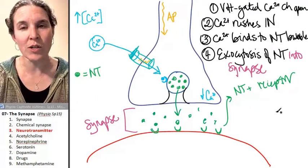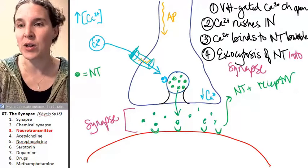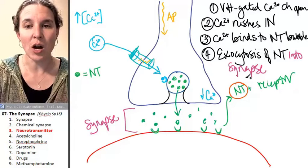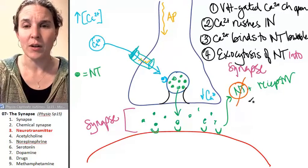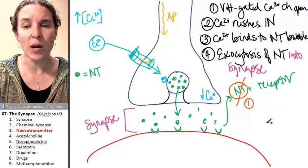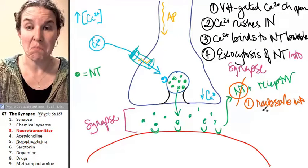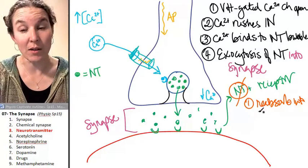So how do we get the neurotransmitter out of there? Well, there's a couple of strategies we can use. Number one: reabsorb it into the presynaptic neuron.